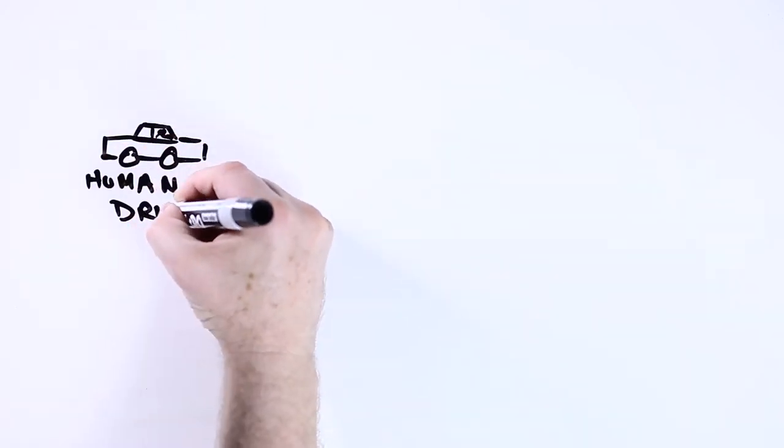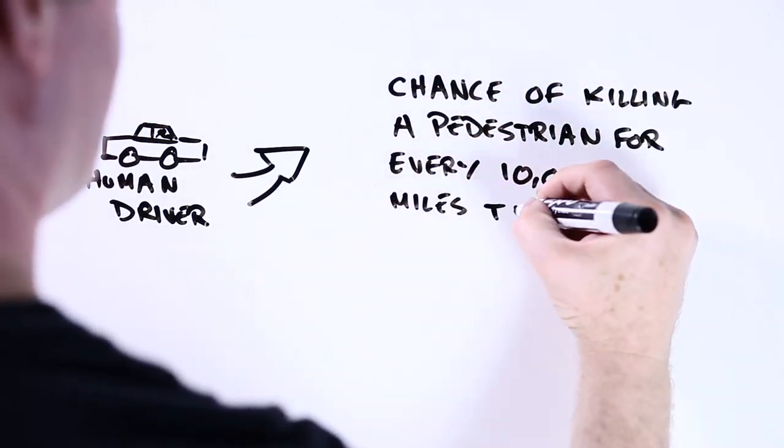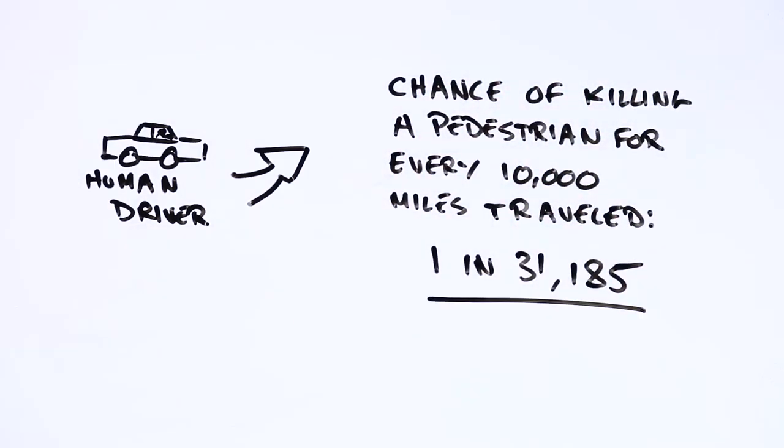Ironically, they're so long because relatively few people are killed by cars compared to the number of miles driven in the US, and so it takes a long time to build up statistically significant data.